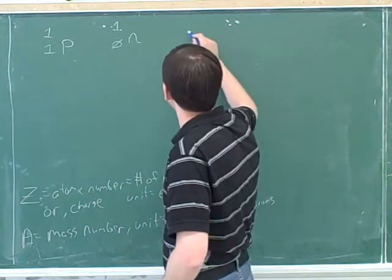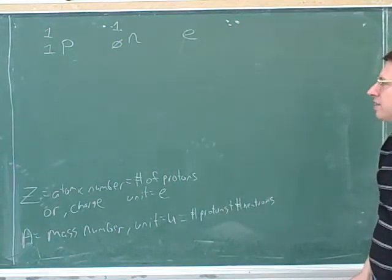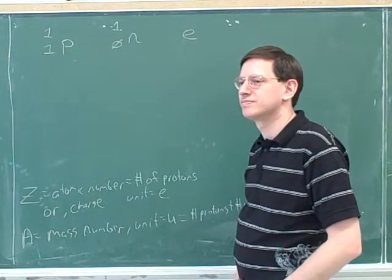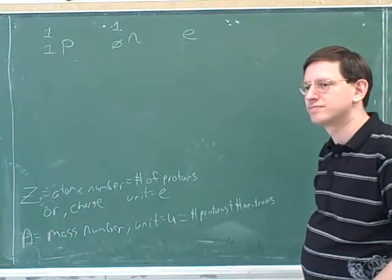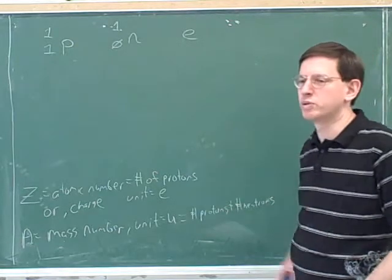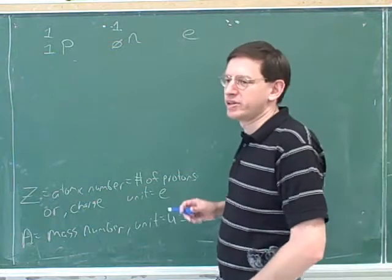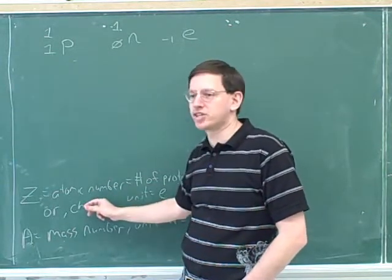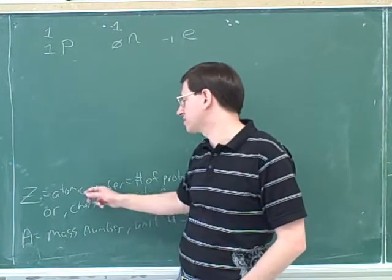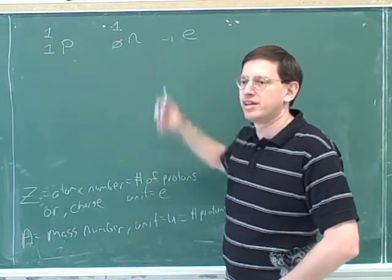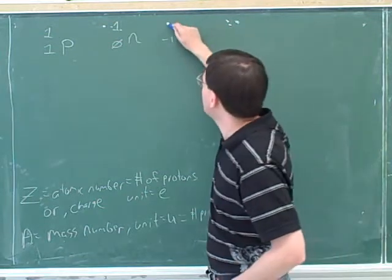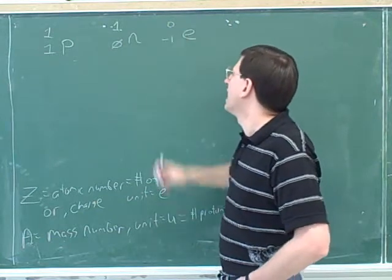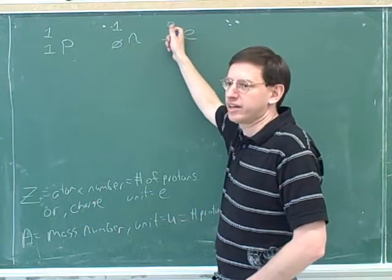How about an electron? What would be the correct A and Z for an electron? Z is the bottom number. This is why thinking of Z as the atomic number is not very clear — our broader definition is that Z is a measure of charge. The charge of an electron is negative one. Its A would be zero — not exactly zero, but so much smaller than other masses that we treat it as zero. So the electron has Z = -1 and A = 0.